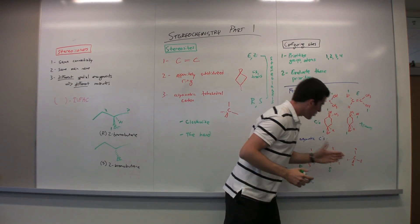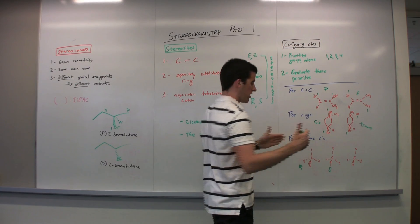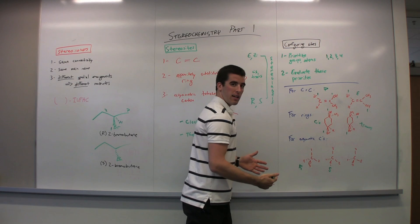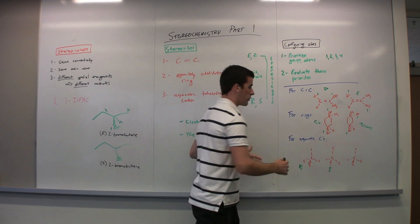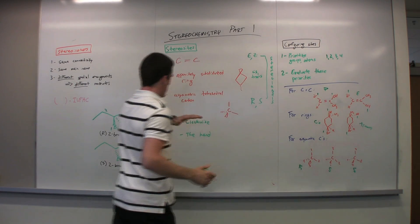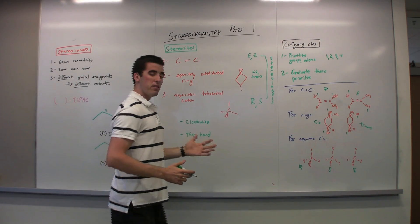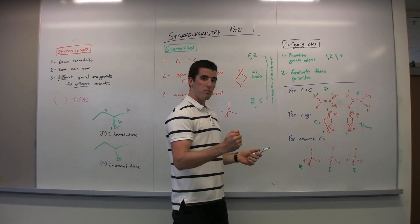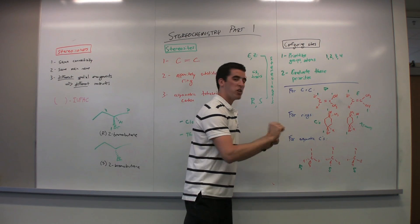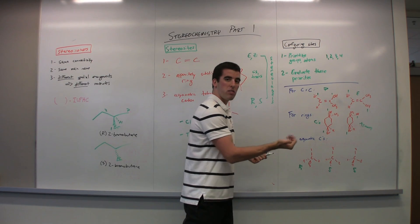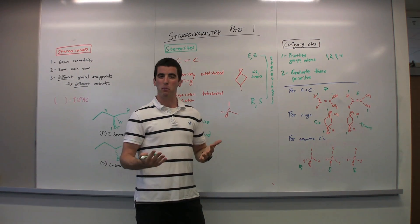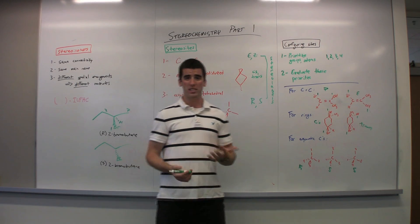What happens if the four is wedged? That's just the complete opposite — imagine you're looking at it from the other way. So four is now wedged, we go one, two, three around the board — it is clockwise, but since you're looking at it from behind, you reverse it. So it would be R, but because number four is wedged instead of dashed, it is S. The other method is the hand method: use your thumb to indicate the direction from the middle carbon to the number four down that bond, and see which way your hand closes. If it closes one, two, three with your right hand, it's R; if it closes one, two, three with your left hand, it's S. You'll be learning that in more detail in your recitations.